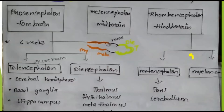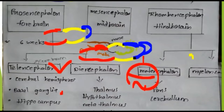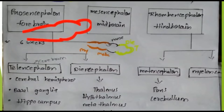Now we look at the developing baby in the uterus. At 3 weeks of development, we can see three primary brain vesicles: prosencephalon, mesencephalon, and rhombencephalon.